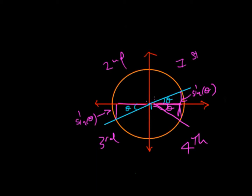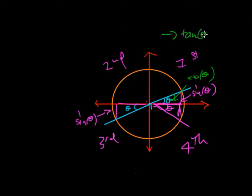We haven't talked about positive or negative signs yet; however, the magnitudes of the different angles will be the same. So the magnitude of sine theta, cos theta, and since both sine and cos are the same, tan is the same as well — these properties also apply to tan theta. An important note is that I've always been taking the angle from the x-axis. Whenever I'm taking an angle from a line, it's always between the line and the x-axis.